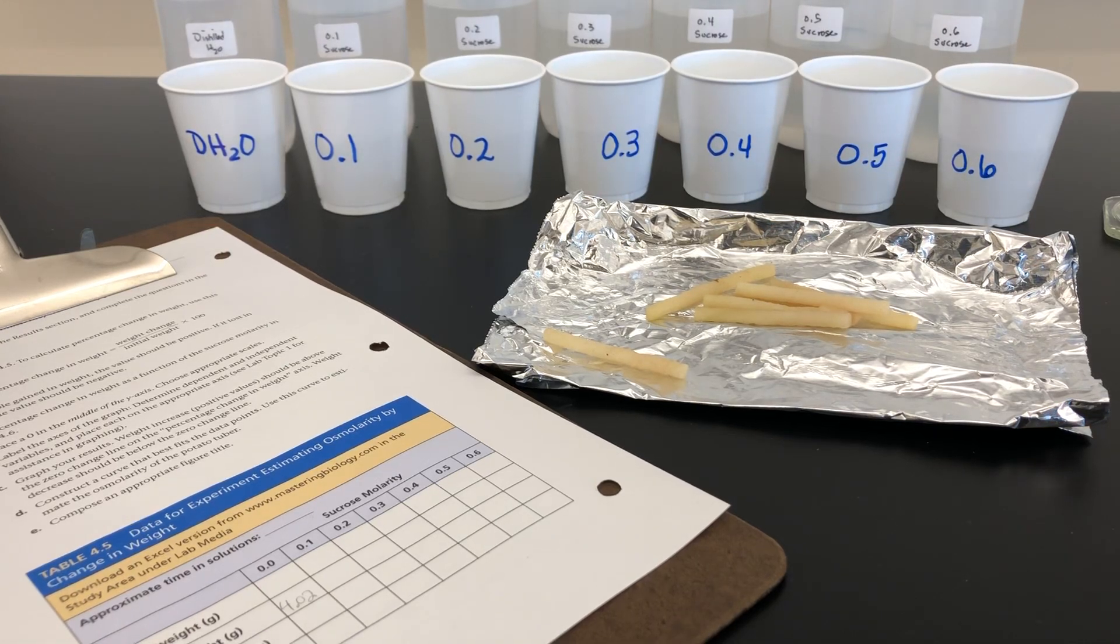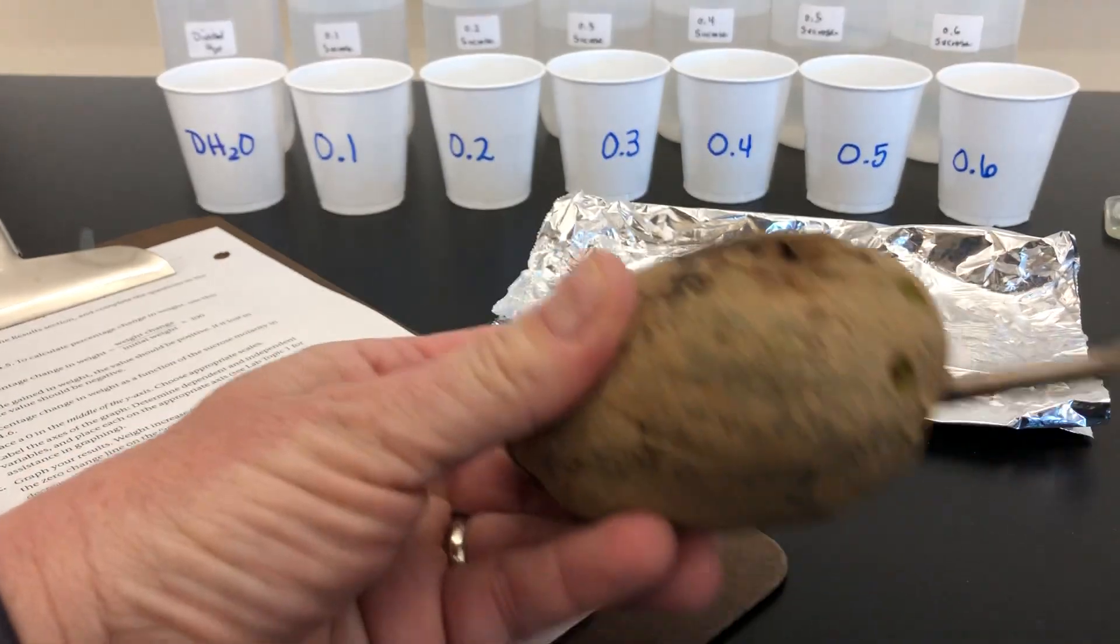This is the setup for Activity A, Exercise 4.3. In the foreground, you can see long cylindrical cuts of potato. I've done that by using a boring apparatus.